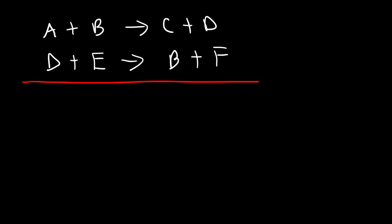To identify the catalyst, the catalyst appears on the left side first and then shows up on the right side. And the catalyst is not part of the overall reaction. The intermediate appears on the right side first and then shows up on the left side later, and it's also not in the overall reaction.